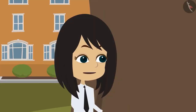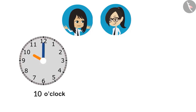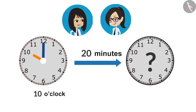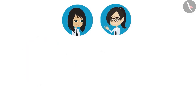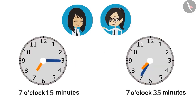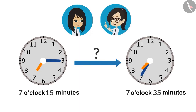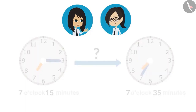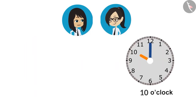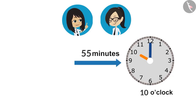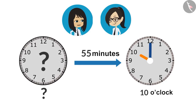Last time we learned three things. First, if the start time of a task is known and how much time it will take to complete the task, we can tell the end time of the task. Second, if the start time and end time of a task is known, then we can tell how much time it will take to complete the task. And third, if the end time and how much time it will take to complete the task is known, then we can tell what was its start time.